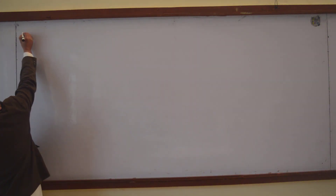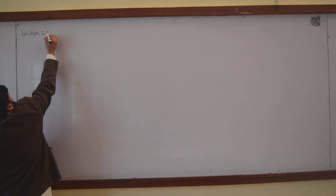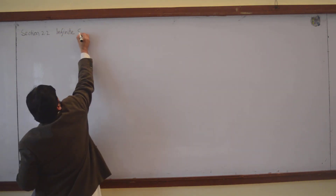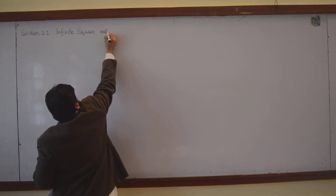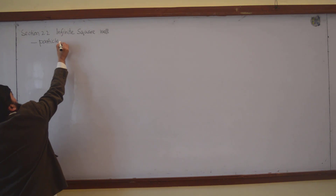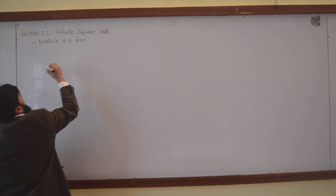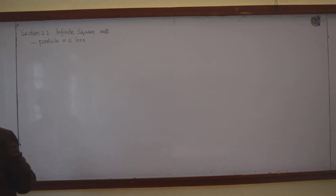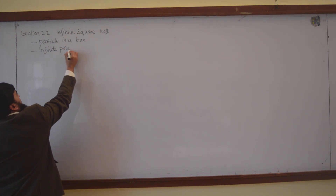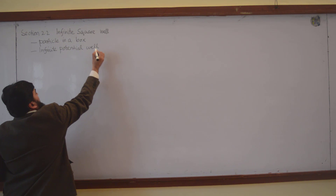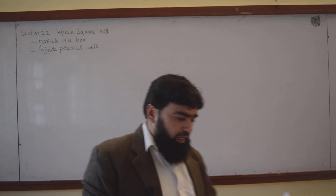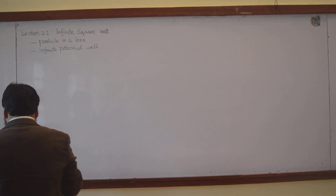This is section 2.2 of your book: the infinite square well. Another name for this is 'particle in a box,' and yet another name is 'infinite potential well.' All these names are actually depicting one topic in quantum mechanics, and we will study this today.